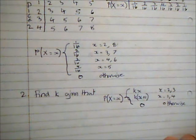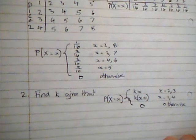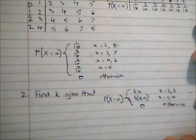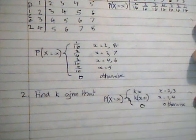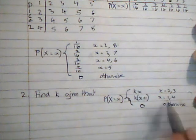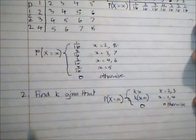So second question here. I have a probability distribution written as a function and I want to find the value of k. So if I look here, I'm told that for two values of x I've got kx, and for two other values of x it's k multiplied by x plus 1, otherwise it's 0. Now I should know that the sum of all probabilities is 1, so I'm going to substitute each of these values in.